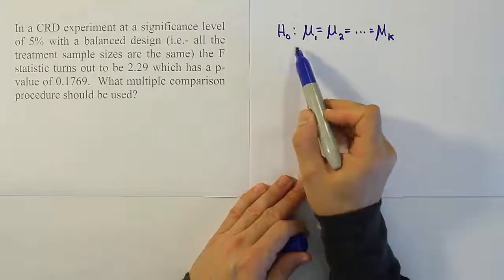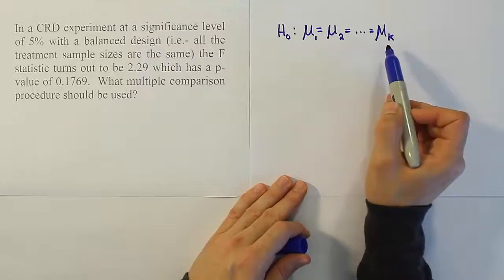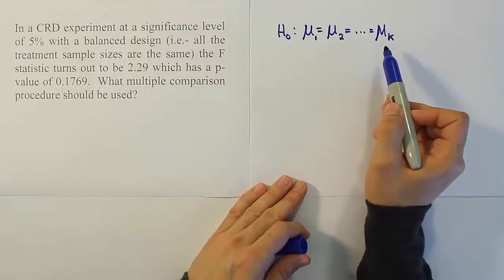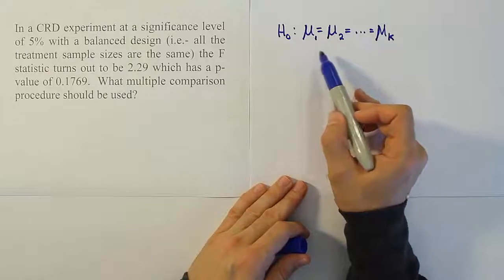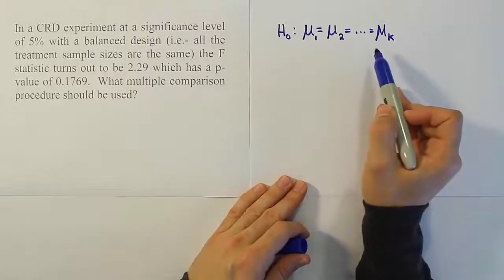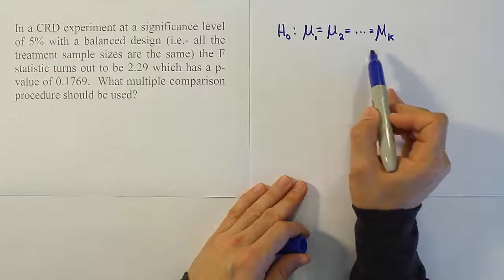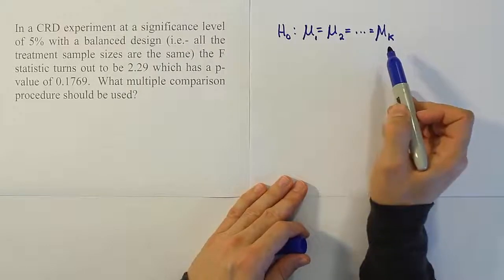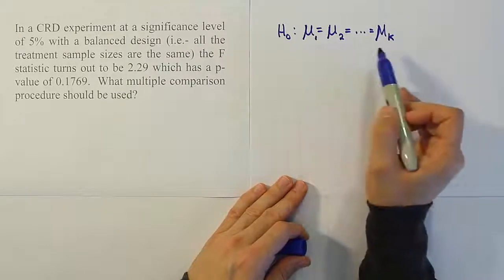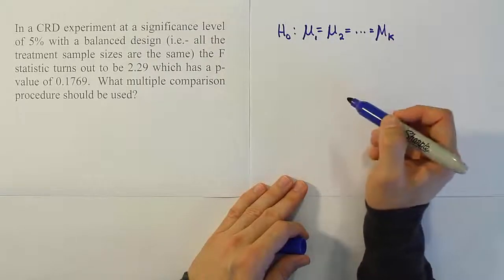That's the null hypothesis. We run our hypothesis test against that idea — we try to see if this idea is true, and we either reject it or we do not reject it. Now, if we don't reject it — if we let it stand as if it were true — then there'd be no reason to do a multiple comparison procedure. Why compare things that are all believed to be the same?